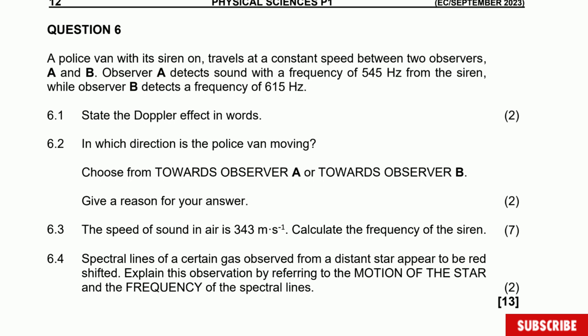This question says a police van with its siren on travels at constant speed between two observers, A and B. Observer A detects sound with a frequency of 545 hertz from the siren, while observer B detected a frequency of 615 hertz. Question 6.1: State the Doppler effect in words.